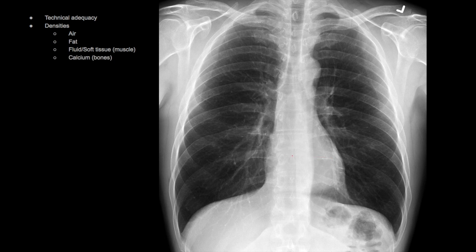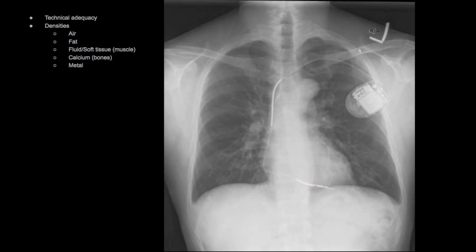The next highest density on our radiograph is going to be calcium, or bones — our osseous structures, such as these ribs. We did talk about the inspirational component of counting the posterior ribs and wanting proper adequate inspiration. The highest density you're going to see on a conventional radiograph is going to be metal. In this case, we have an example of an implantable cardioverter defibrillator with a lead going into — can you tell me what this is projecting over? That's the right ventricle. This lead overlays the left subclavian, the SVC, going past the right atrium and into the right ventricle.